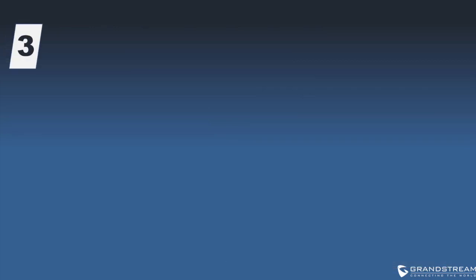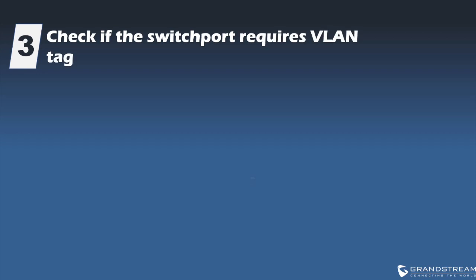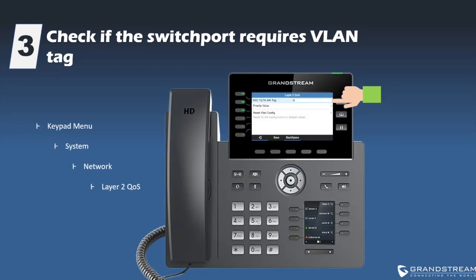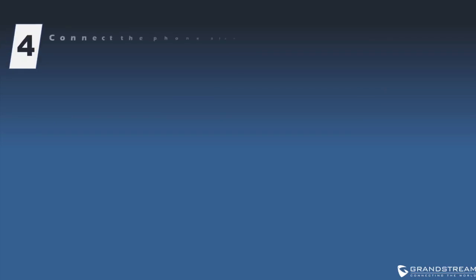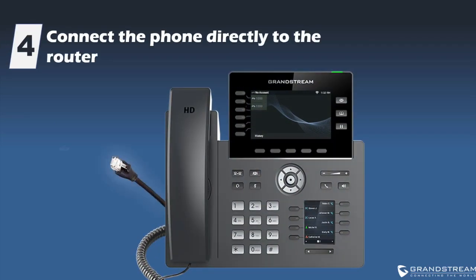If the phone is still not assigned an IP address and still shows the network down message, check if the switch port requires the traffic to be tagged with the VLAN ID. You can set that up using the phone's keypad menu by going to Network Settings. If no VLAN tag is required, try connecting the IP phone directly to an available LAN port on your router. This will help rule out any issues with your switch and cabling.